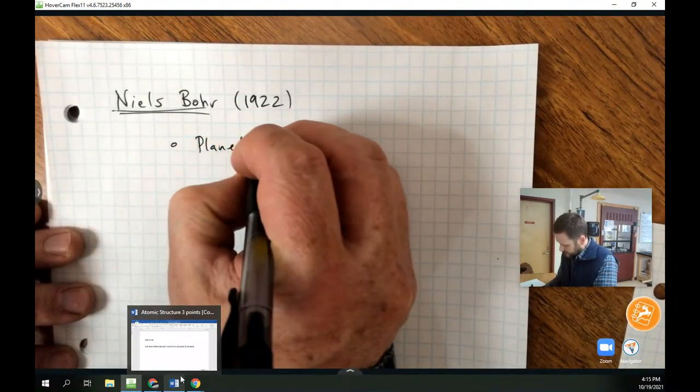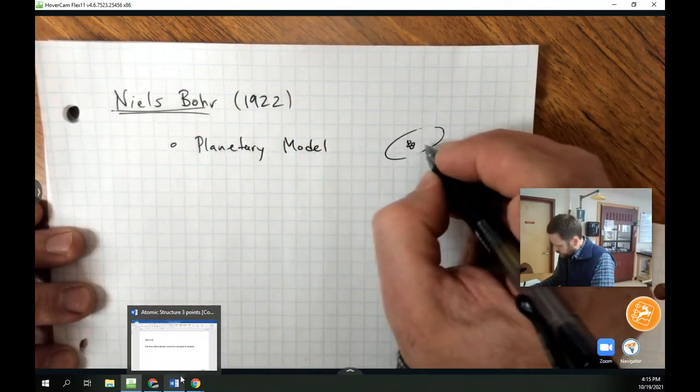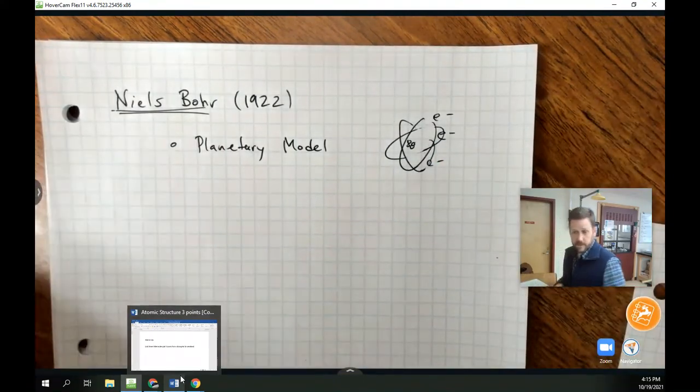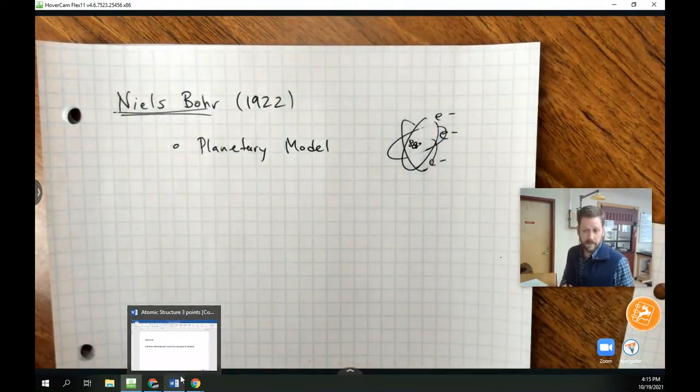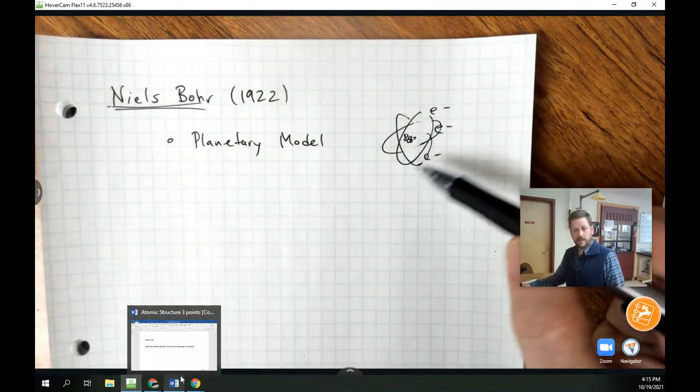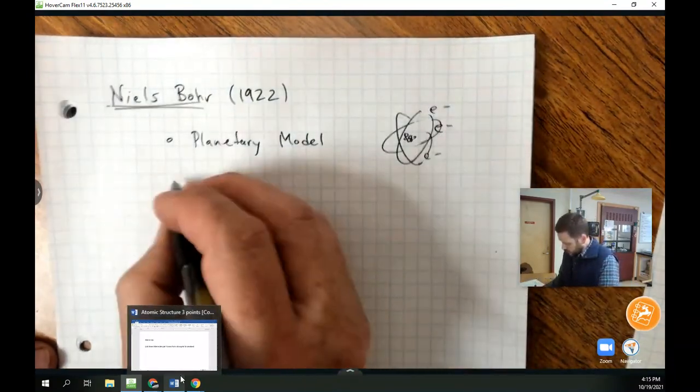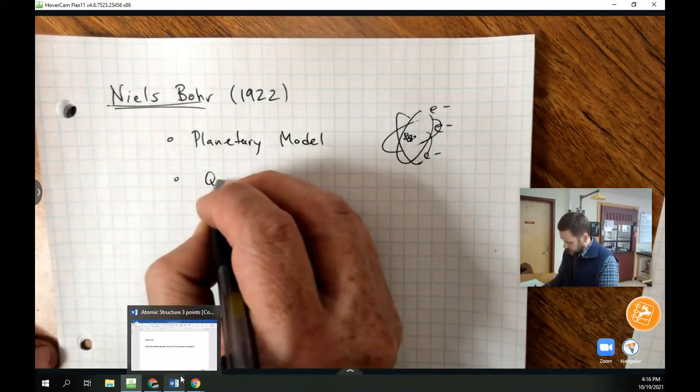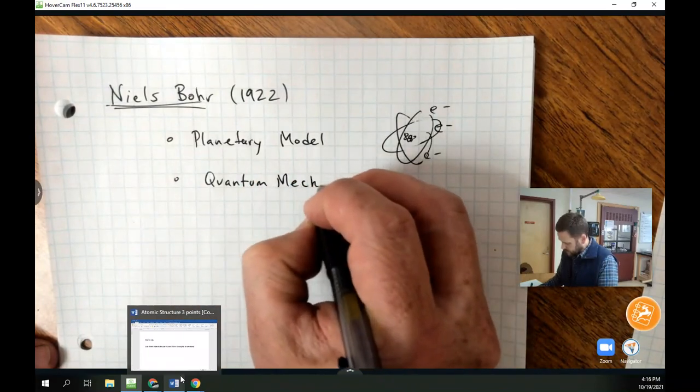And what he is known for is, first of all, the planetary model of the atom, and this is what we drew at the beginning of this unit. I think when we drew electrons like this orbiting the nucleus of a lithium atom, and you still see, of course, the general drawing of an atom look like this, kind of the symbol for nuclear energy. And he suggested that electrons orbit the nucleus the way planets orbit the sun. Well, that isn't quite right, and he needed to revise his model a little bit later to incorporate this idea of quantum mechanics.